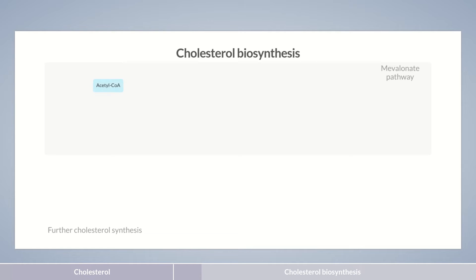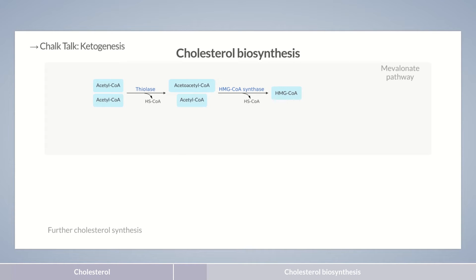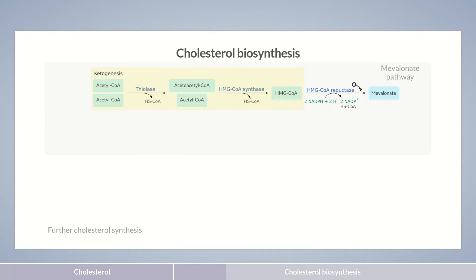Acetyl-CoA is used as a starting material and converted first to acetoacetyl-CoA, then to HMG-CoA. These first two reaction steps are part of ketogenesis. In the third step, HMG-CoA is then reduced to mevalonate by the enzyme HMG-CoA reductase. This enzyme is the most important of all those involved — it catalyzes the rate-limiting step and is therefore the key enzyme in cholesterol biosynthesis. This reaction requires two reducing equivalents of NADPH and H+.